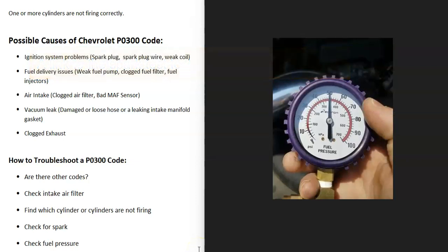If you're getting spark to those cylinders but they're still having issues, the next thing to check is fuel. It could be a weak fuel pump or a clogged fuel filter. A quick way to rule these out is to use a fuel pressure gauge on the fuel rail. With the engine running, the pressure should be at spec. For example, if your engine should be at 60 PSI but it's only reading 50 PSI, the fuel pressure is weak, pointing to a bad fuel pump or fuel filter.